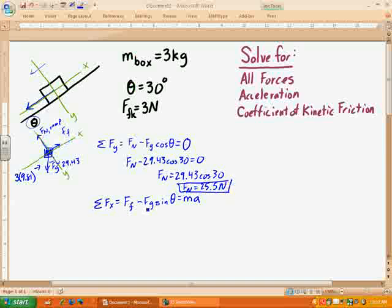So let's go ahead and put that in here. Oh, we've already got friction. Friction was given to us. So we'll go ahead and put that in. So we'll have 3 newtons of force for the friction minus the force of gravity, which was 29.43 sine of theta, equals the mass, which is 3 times the acceleration.